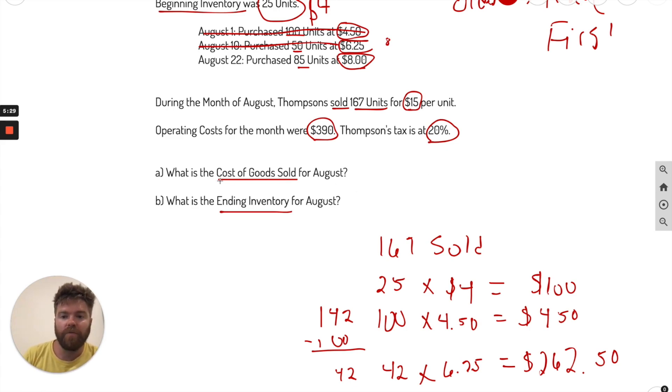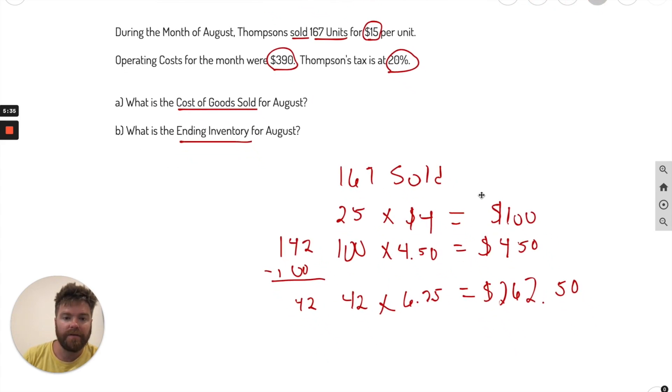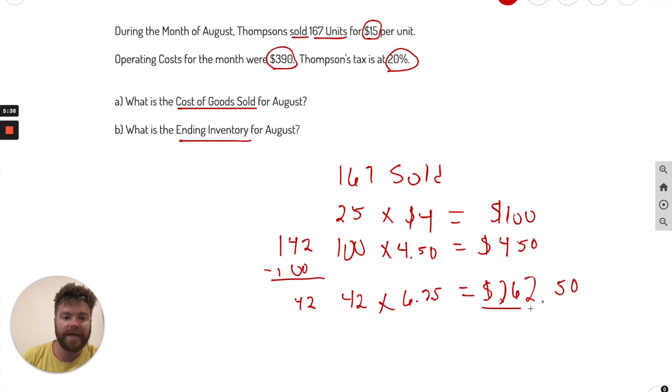So first question, what is the cost of goods sold for August? All we have to do is just add these up, and that's going to equal our cost of goods sold. So let's take a look: $262.50 plus $450 plus $100. That is going to be $812.50. So we'll go ahead and write that in here. Cost of goods sold is equal to $812.50.